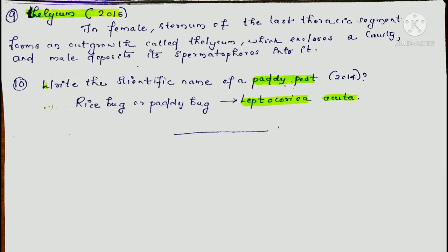The next question is thelycum, asked in 2016. Thelycum is a female structure in which the male's sperm is deposited. It is present in the female's body where the male sperm is stored.